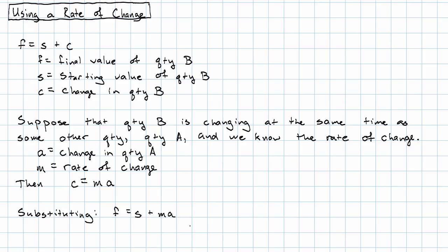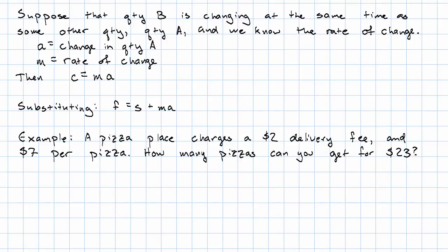Okay, that seems really weird. Let's get really concrete here. So, you're ordering pizza with your friends. The pizza place charges a $2 delivery fee and $7 per pizza. You pass a hat around to all your friends and you come up with $23. How many pizzas can you get for $23?